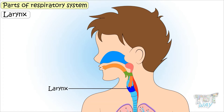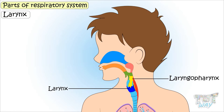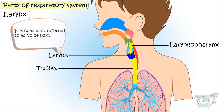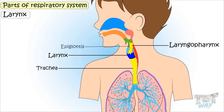Larynx: The next part is the larynx. It connects the laryngopharynx to the trachea and is also commonly referred to as the voice box. The epiglottis is also a part of the larynx.